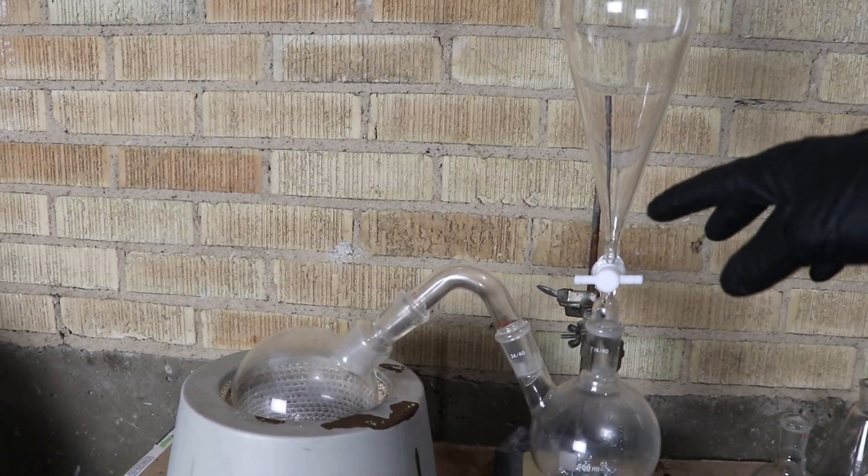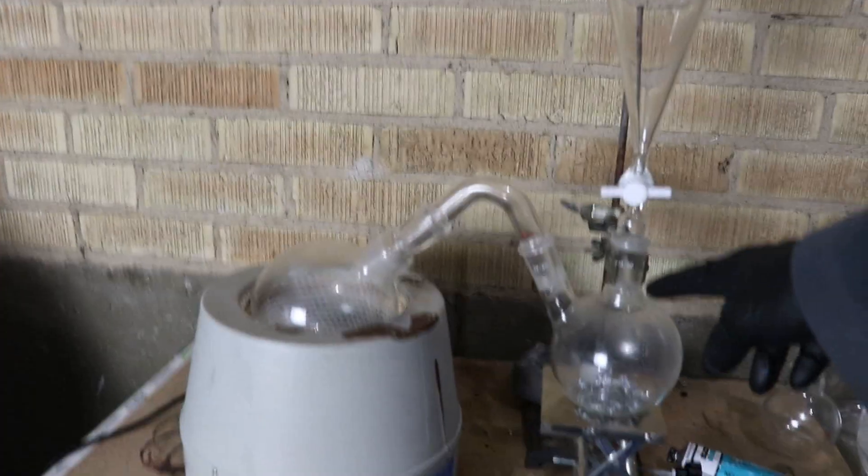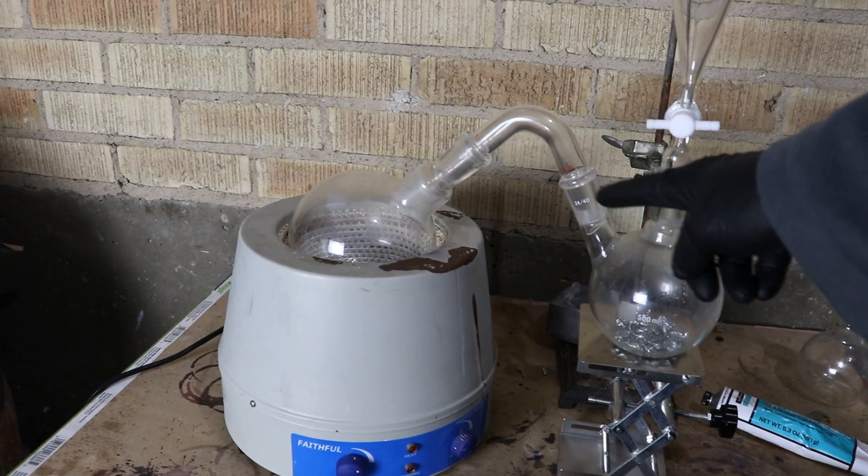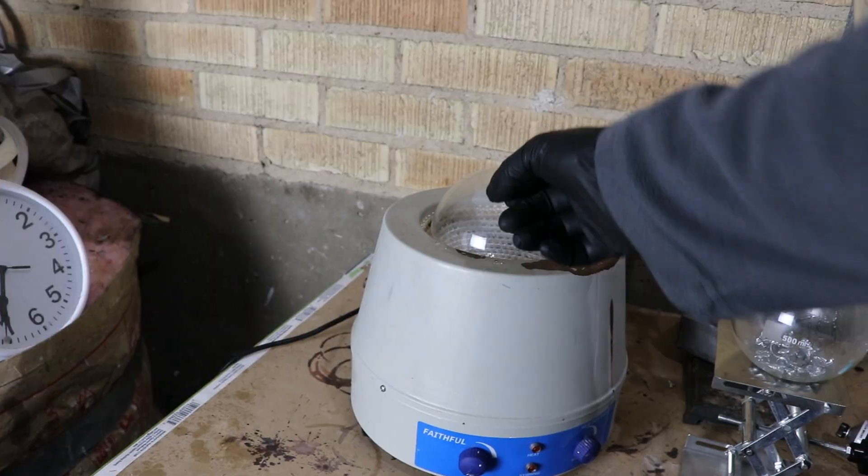The first shipment just came in and I've got this separatory funnel, this two-necked flask, a little elbow, and I already had this.